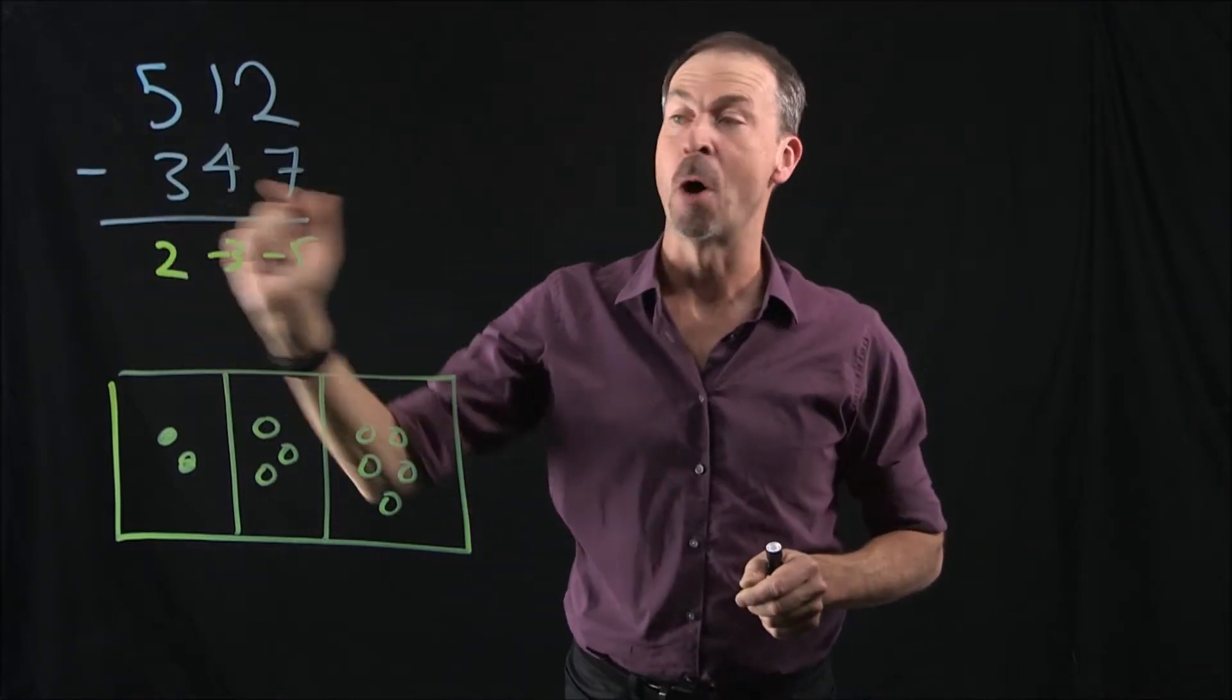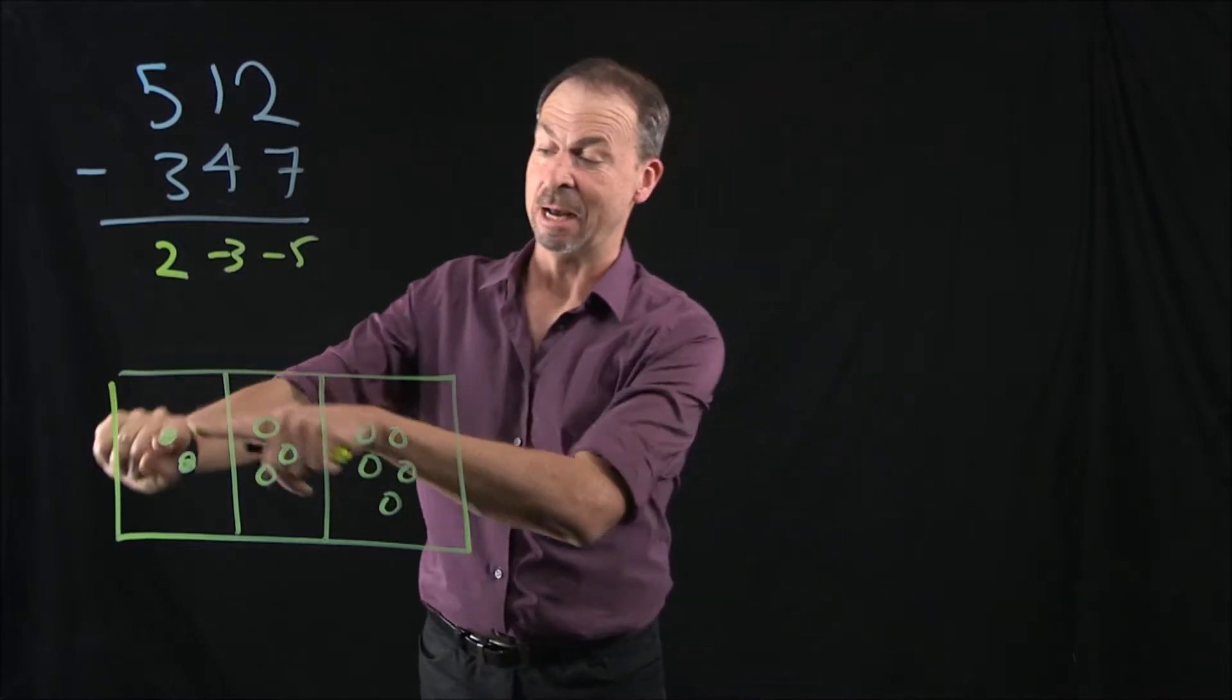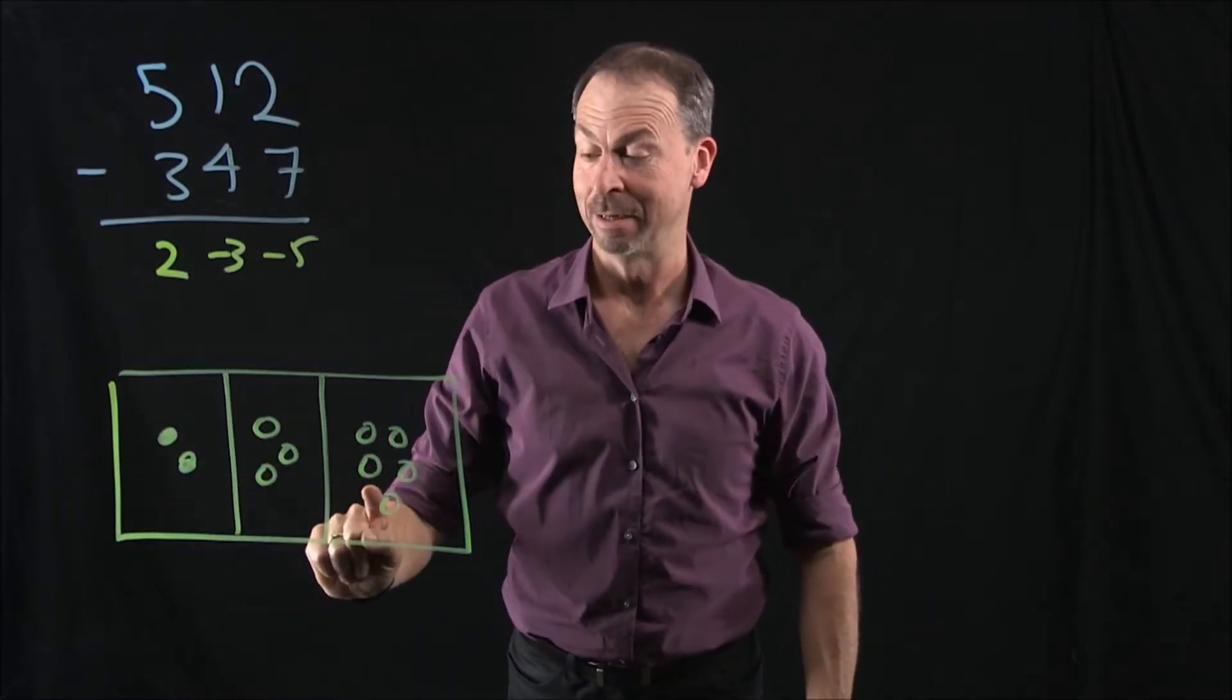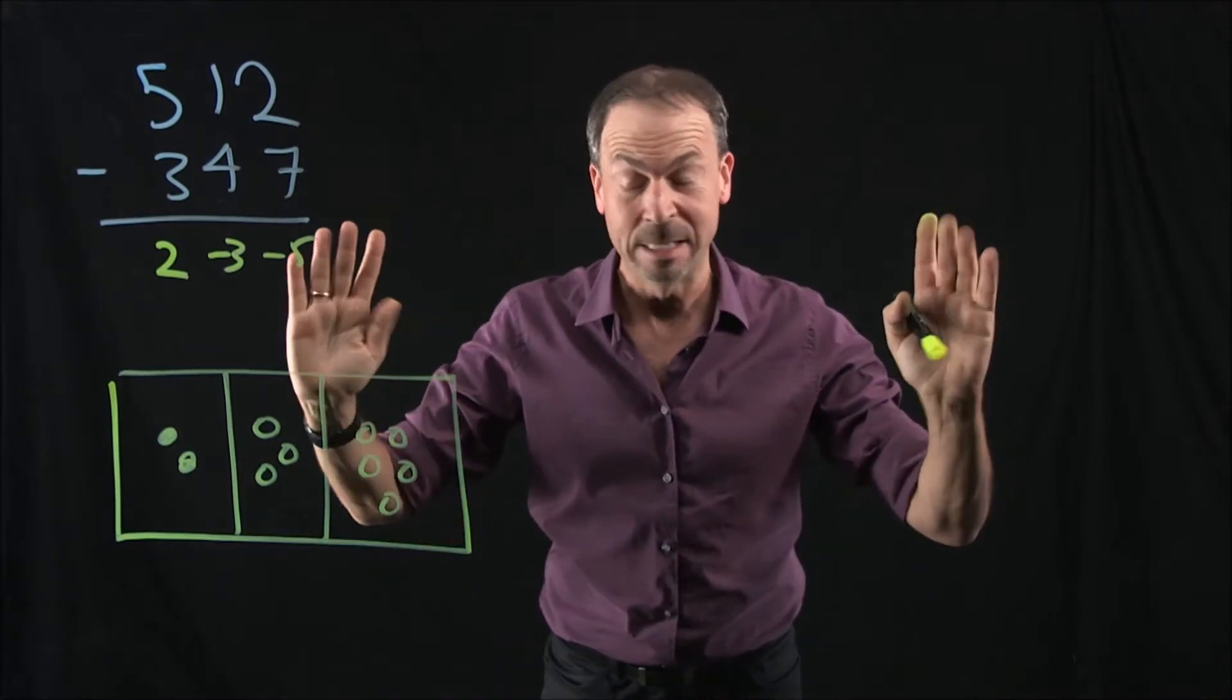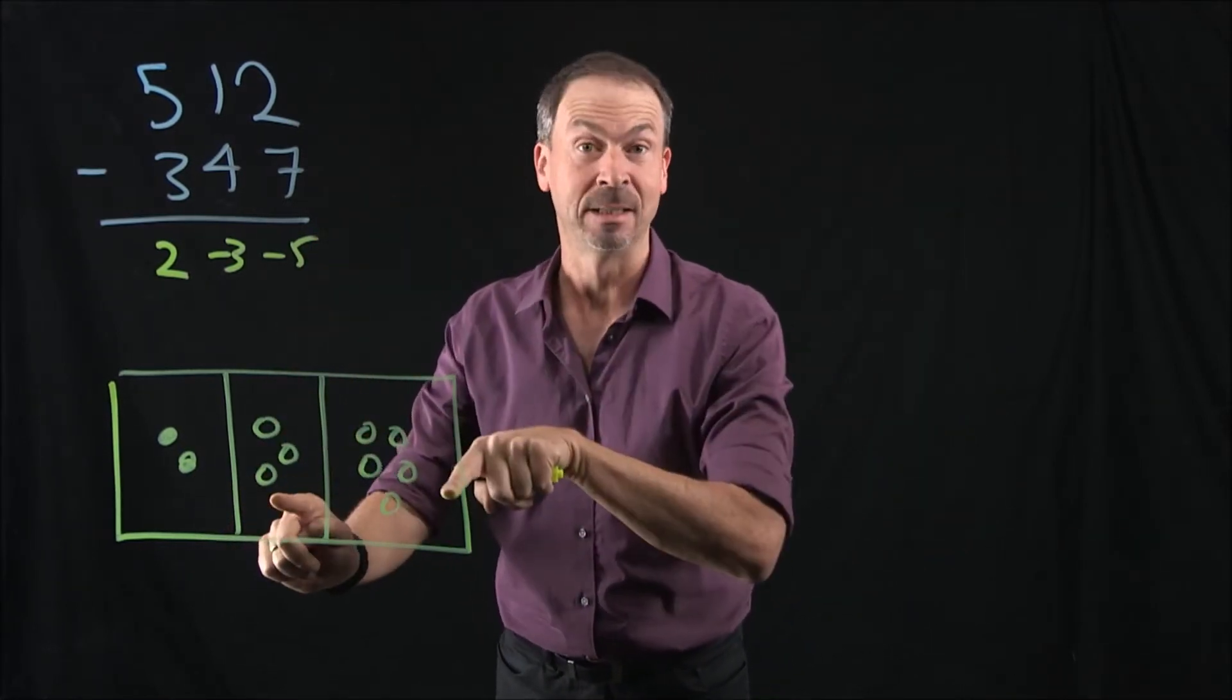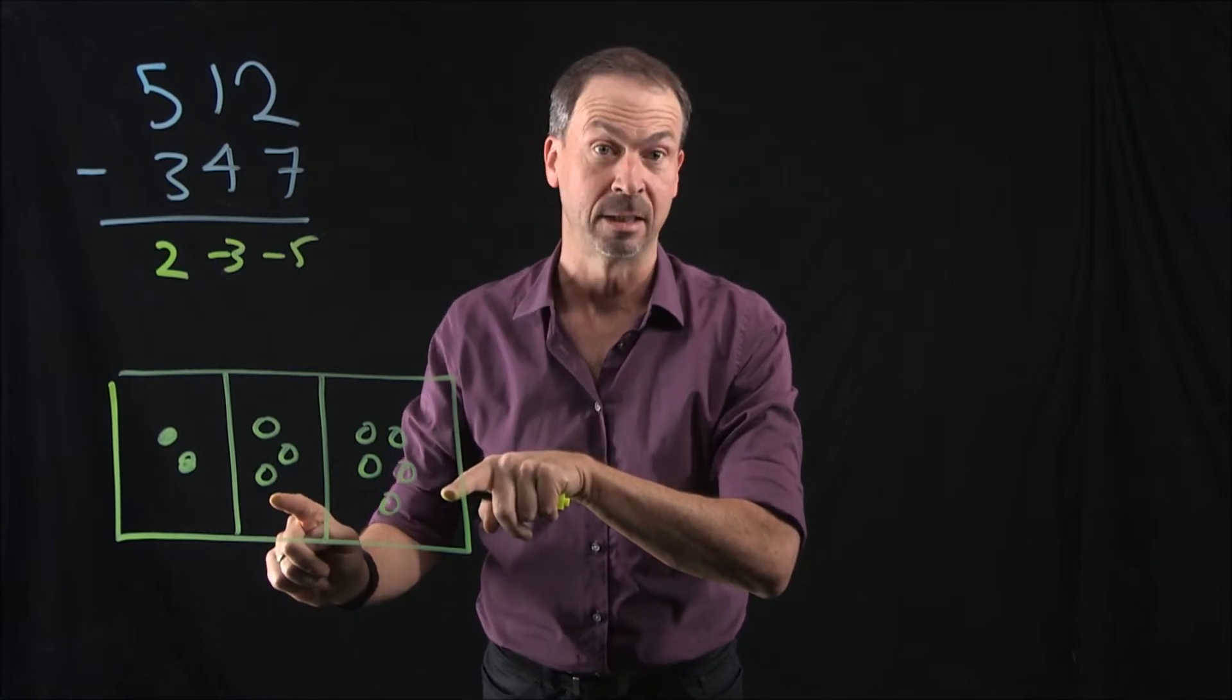So what I'm really doing is adding the opposite of 347. And after some annihilations, we get 2, negative 3, negative 5. 200, negative thirty, negative 5. And then we did unexplosions to fix this up for society. I believe we got the answer 165 from that.